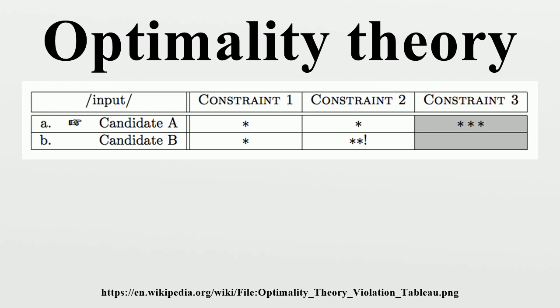Each plays a crucial role in the theory. Faithfulness constraints prevent every input from being realized as some unmarked form, and markedness constraints motivate changes from the underlying form.